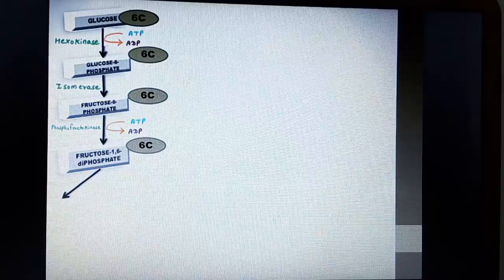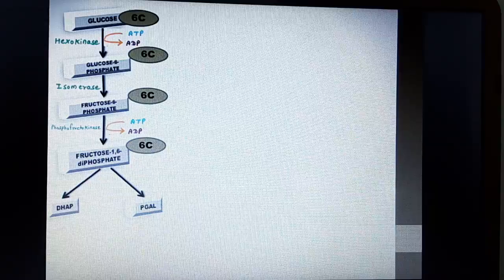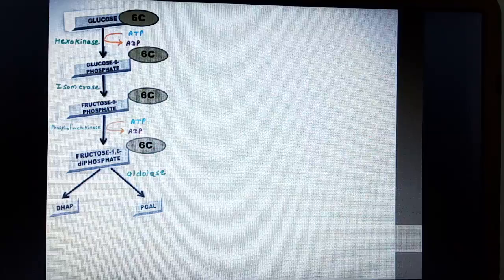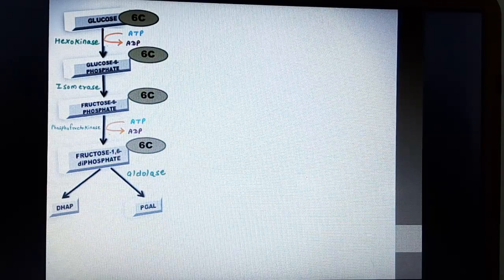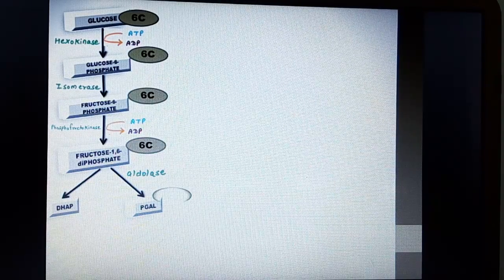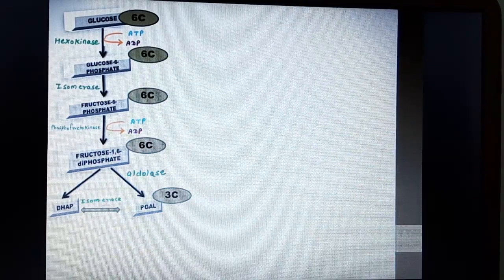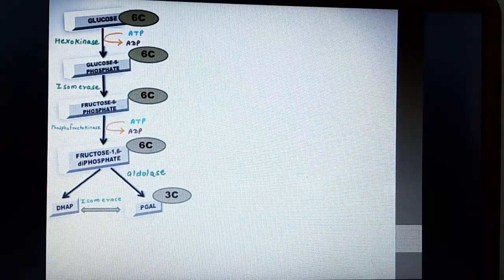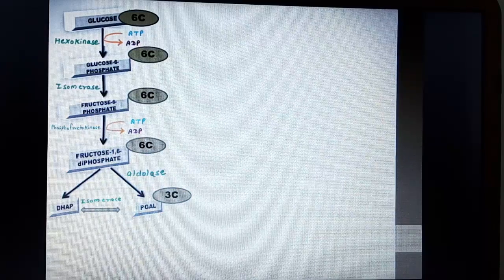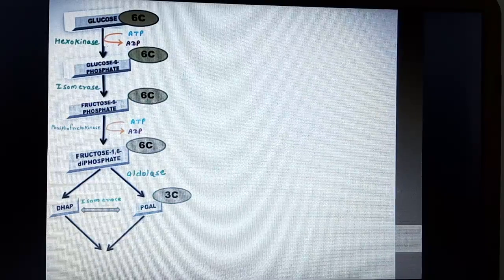Fructose 1,6 diphosphate now undergoes cleavage forming 2 compounds DHAP and PGAL. What is DHAP? It is dihydroxyacetone phosphate which is 3 carbon compound and PGAL is phosphoglyceraldehyde which is also 3 carbon compound. This reaction takes place in the presence of enzyme aldolase. Now DHAP is little bit unstable or less stable, so DHAP is converted or it undergoes isomerization and forms PGAL. So in short one PGAL was there and DHAP is also getting converted into PGAL. So you get 2 molecules of PGAL.